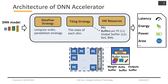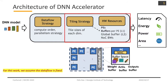The architecture of the oscillator includes three things: for strategy, tailing strategy, and hardware resources. Hardware resources includes PE, buffer inside HPE, and global buffer and log bandwidth. The buffer inside HPE is related to the tail strategy that we use.